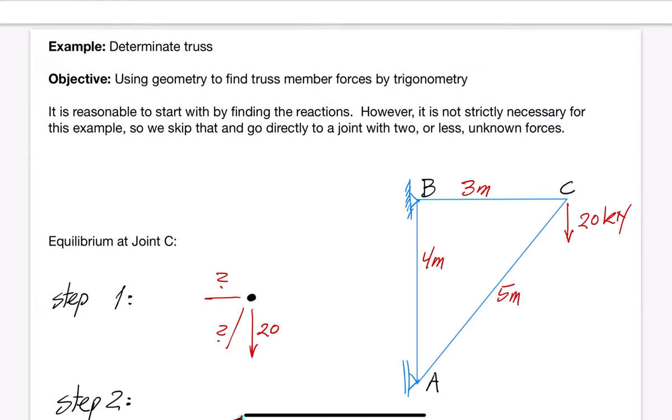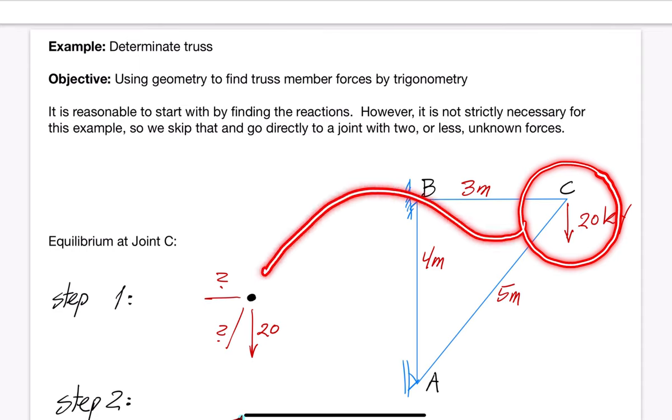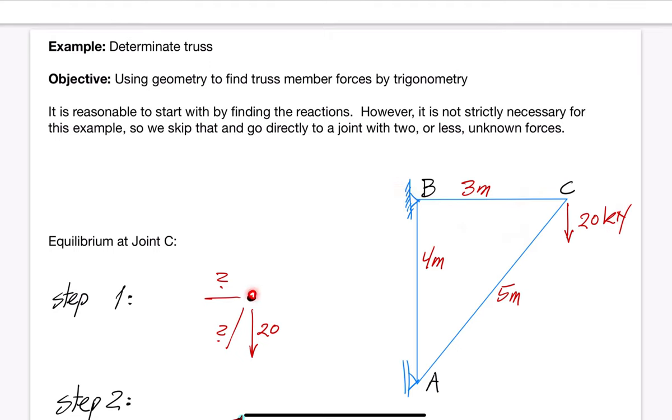Instead of expressing the two equilibrium equations for equilibrium in the horizontal and vertical directions, we wish to practice the closed force polygon approach. That is the graphical approach explained earlier in this short course on equilibrium. In step one of that approach, we create a solid dot that makes the point where we wish to apply equilibrium.